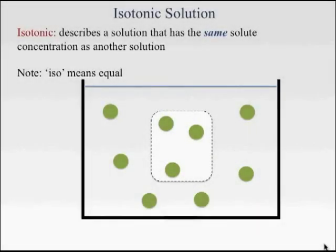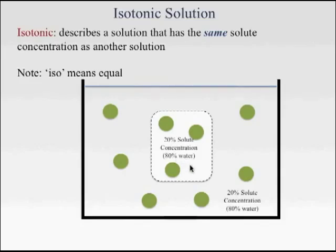An isotonic solution describes a solution that has the same solute concentration as another solution. Iso means equal. In this example we see a cell. The cell contains some solutes. The concentration of solutes in the cell is 20%, which means 80% of the cell must be made up of water. The isotonic solution surrounding the cell also has a concentration of solutes of 20% and an 80% water concentration.